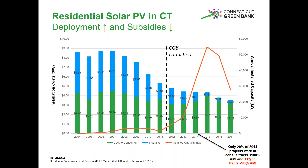One of our biggest residential programs is the Residential Solar Investment Program, a declining incentive program open to owner-occupied single-family households in Connecticut, launched in 2012. After it launched, we saw huge growth in the residential solar PV market, even as subsidies continued to decline. But when we started looking at the distribution of solar adoption throughout the state in late 2013 and early 2014, we saw that penetration was much higher in upper-income census tracts. In fact, in 2014, only 29% of residential solar projects were in census tracts with a median income less than 100% of the area median.